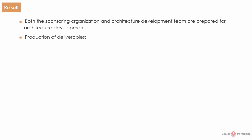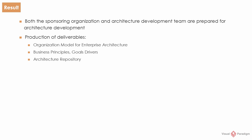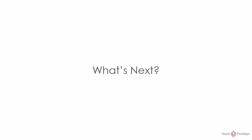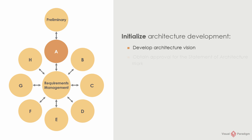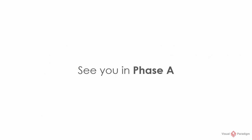In this phase, the following deliverables will be produced: Organization model for enterprise architecture; Business principles, goals, and drivers; Architecture repository; and Request for architecture work. We can now move on to the next phase, Phase A. The primary goal of Phase A is to initialize the architecture development — you will identify the stakeholders involved in the architecture and define the architecture vision. Thank you for watching this video. See you in Phase A.